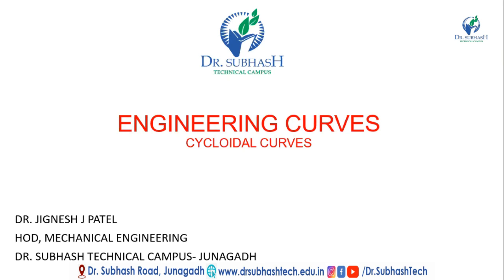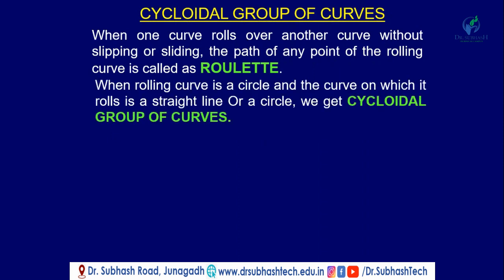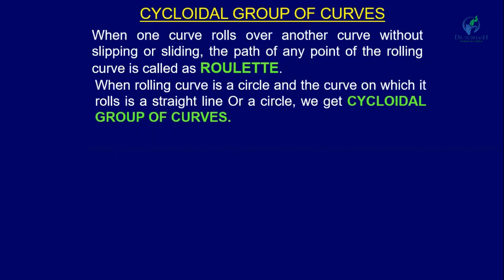Before learning about the cycloidal curve, let us understand what is the roulette. In the cycloidal group of curves, when one curve rolls over another curve without slipping or sliding, the path of any point of the rolling curve is called a roulette. When the rolling curve is a circle and the curve on which it rolls is a straight line or a circle, we get a cycloidal group of curves.